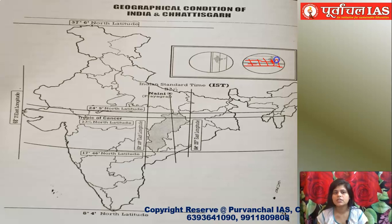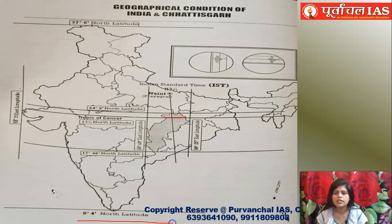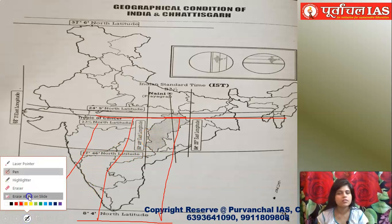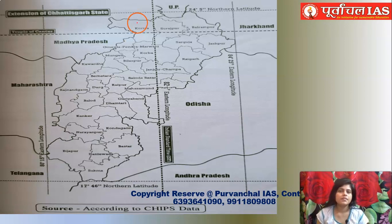India falls in the tropical zone, and most of Chhattisgarh also falls in this zone — from the equator at zero degrees up to the Tropic of Cancer, we have the equatorial and tropical region. Because Chhattisgarh is present in the tropical zone, its climate is certainly tropical.